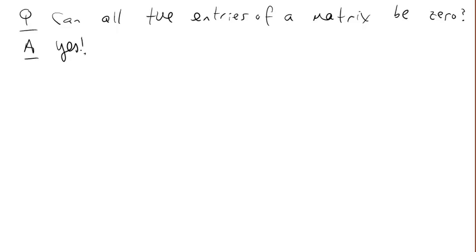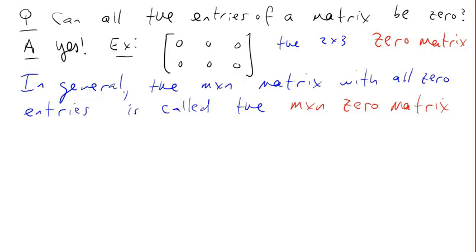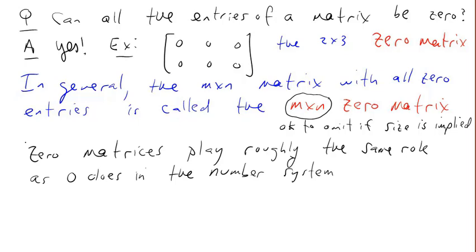Can all the entries of a matrix be 0? Of course they can. Here's a 2 by 3 matrix with all zeros, the 2 by 3 zero matrix. In general, the m by n matrix with all zero entries is called the m by n zero matrix. Sometimes we leave off the size if it's clear from the context.